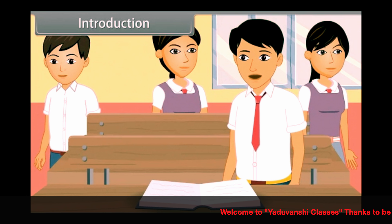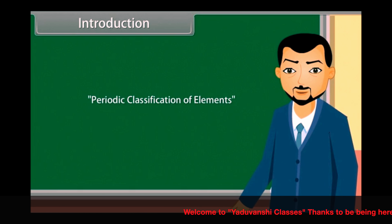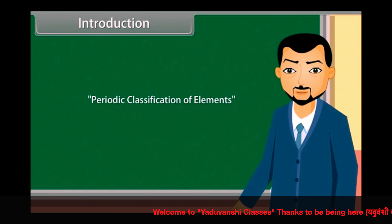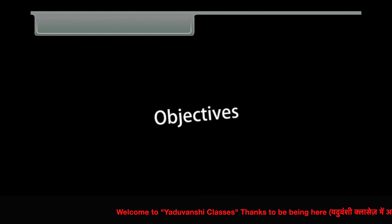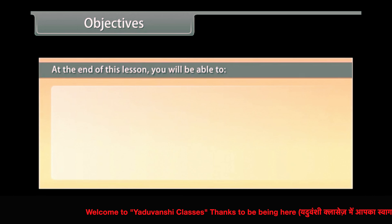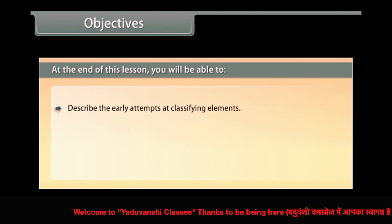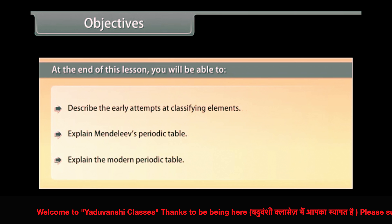Sir, I don't think so. Saga, you are correct. Similarly, when elements were discovered, there was chaos. Let me tell you about this in detail. Children, in this lesson we will learn about the basis on which elements are classified. At the end of this lesson, you'll be able to describe the early attempts at classifying elements, explain Mendeleev's periodic table, and explain the modern periodic table.